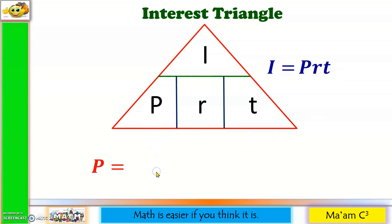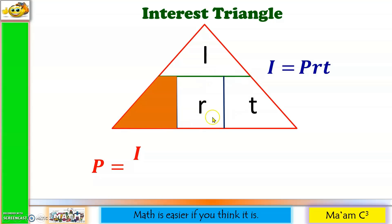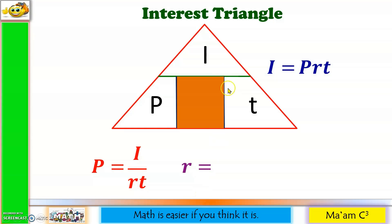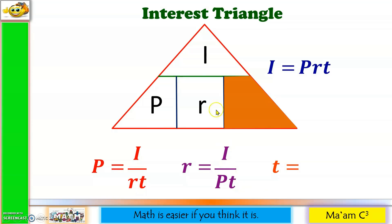What if I'm looking for P? Cover P. I is on top, and R times T is at the bottom, so P equals I divided by RT. What if I want to solve for R? Cover R: R equals I divided by PT. And if I want to solve for T, cover T: T equals I divided by PR.